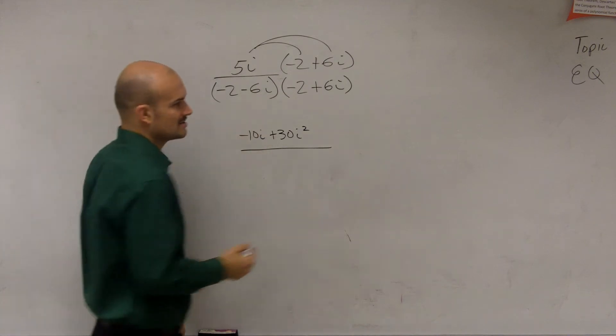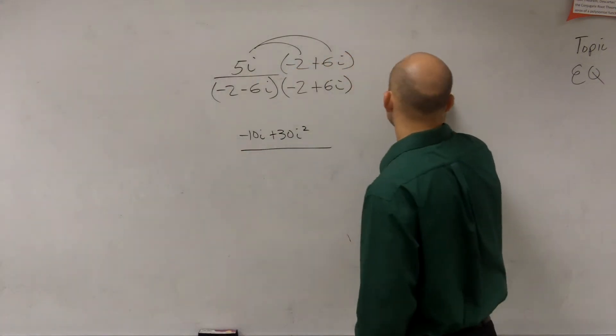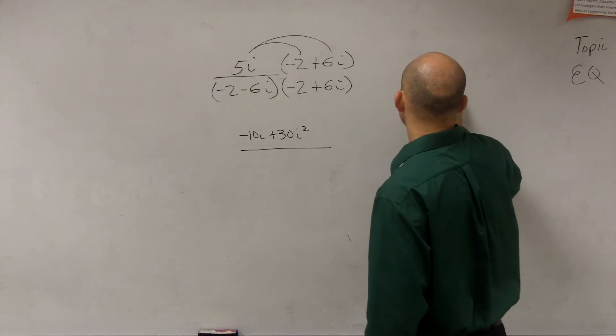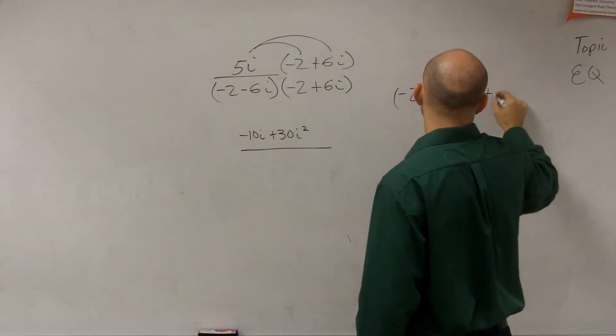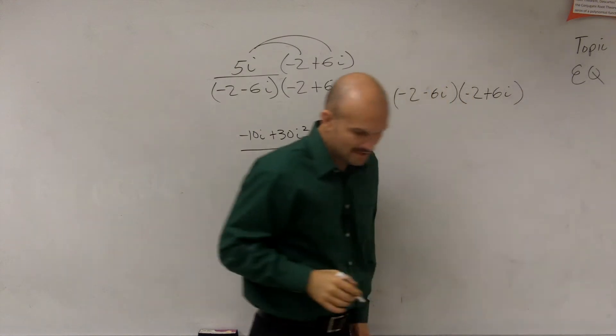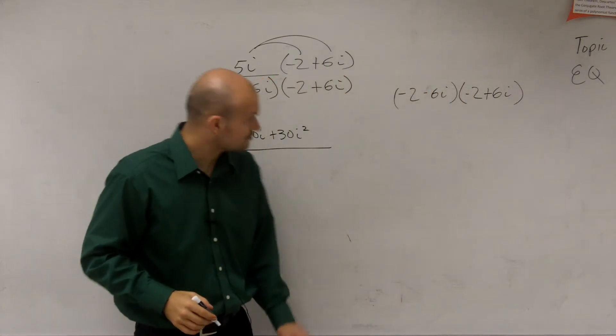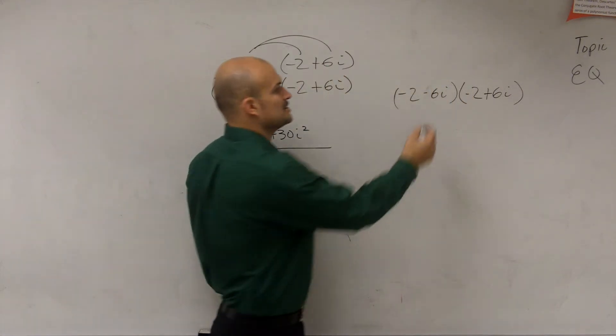But let's multiply conjugate pairs, and I'm actually going to multiply it over here. Negative 2 minus 6i times negative 2 plus 6i. So if I'm going to be multiplying these two numbers, you guys can remember by using FOIL.